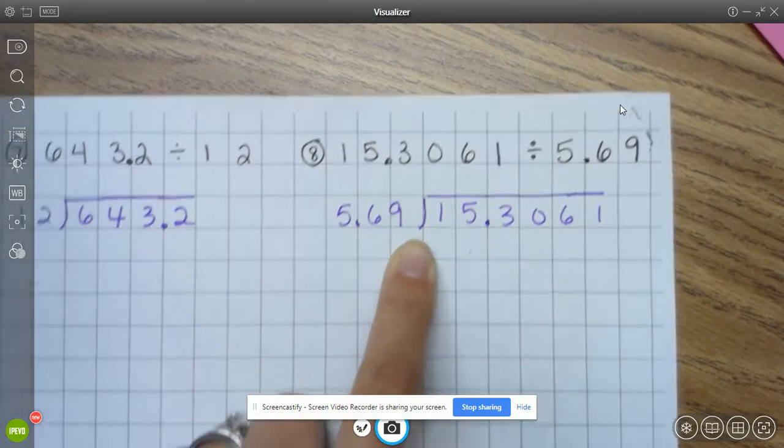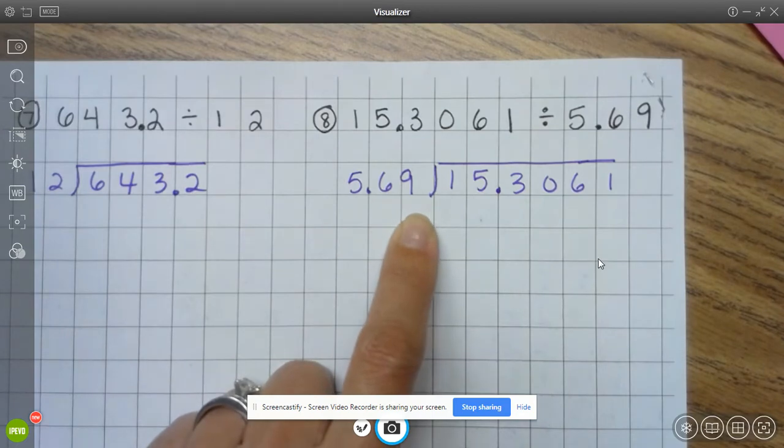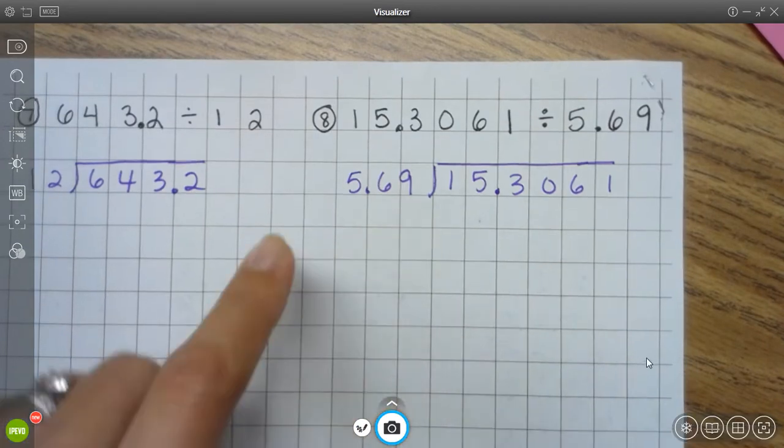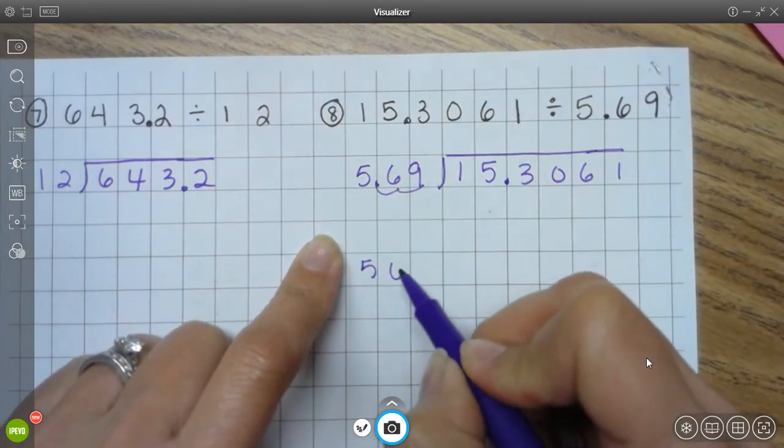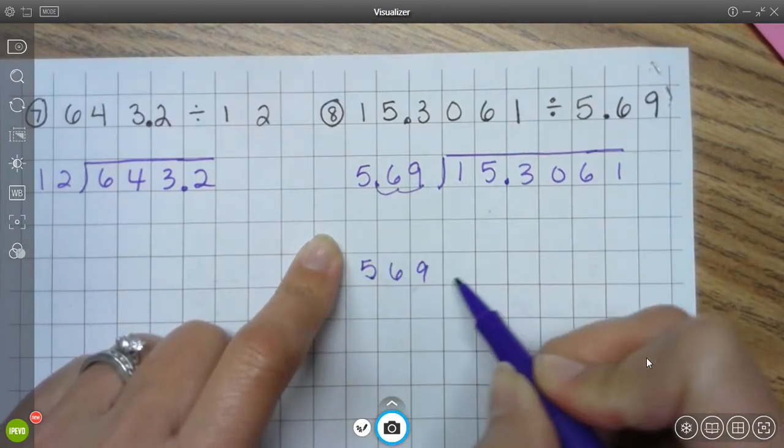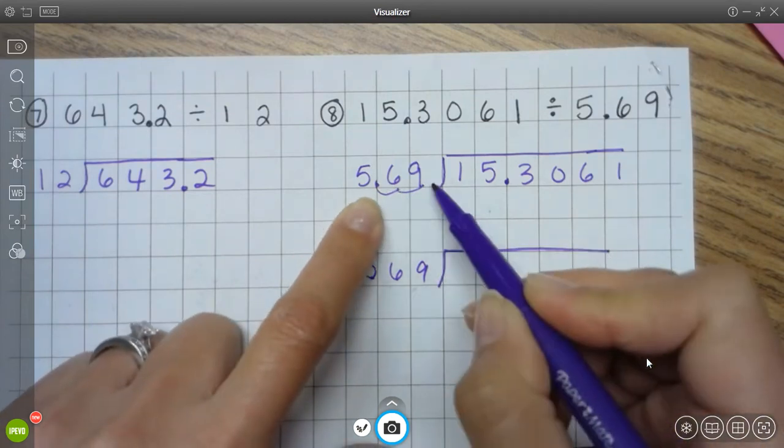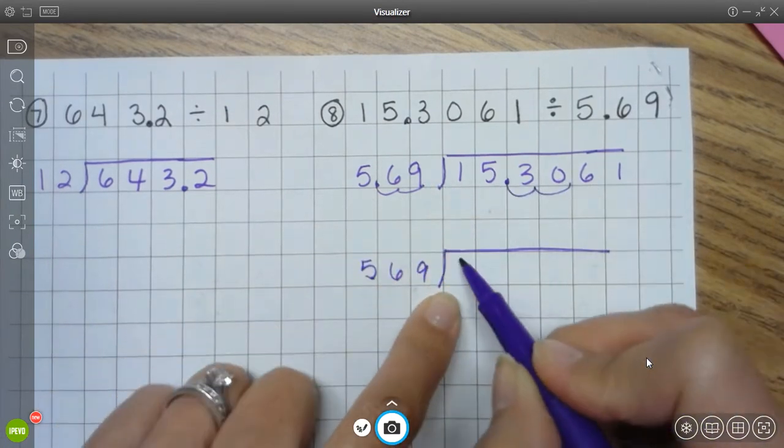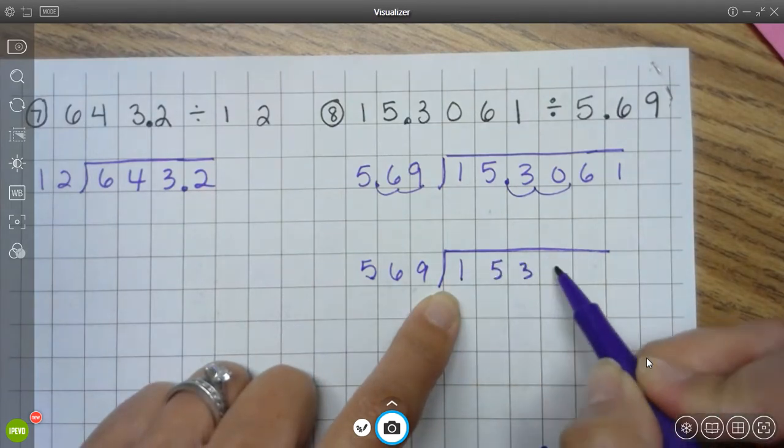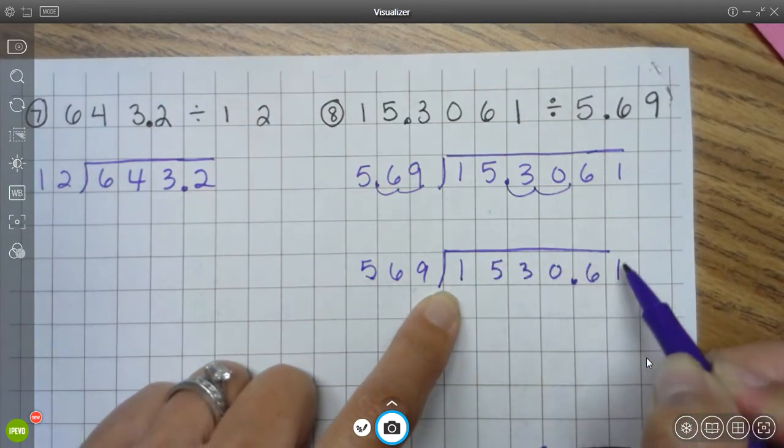Now, I can't solve this yet. I have to get rid of my decimal. Okay, so I need to move it over two times. One, two, becomes whole number 569. So when I move this over two times, I need to move this decimal point over two times, right? 1, 5, 3, 0, and 61 hundredths.